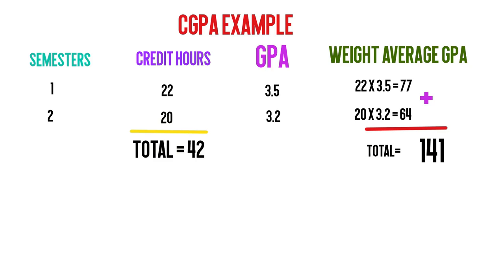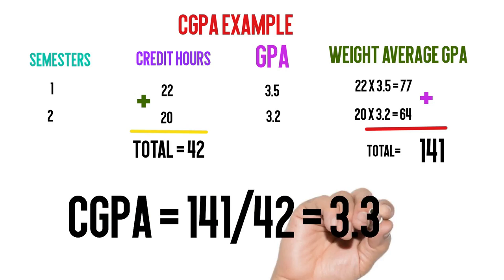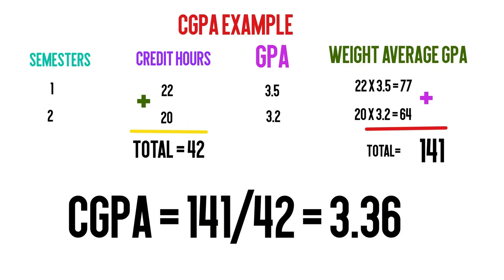If we have additional semesters, we follow these same steps. Now we add 77 and 64 weighted average GPA values to get a total of 141. Then we add 22 and 20 credit hours from each semester to get 42 total credit hours. Finally, we divide 141 total weighted average GPA by 42 total credit hours. We get a CGPA of 3.36.